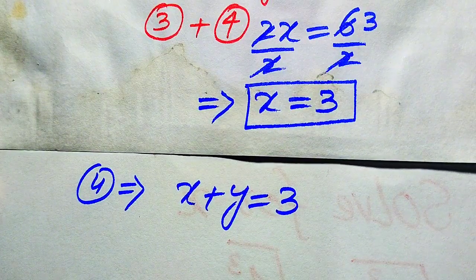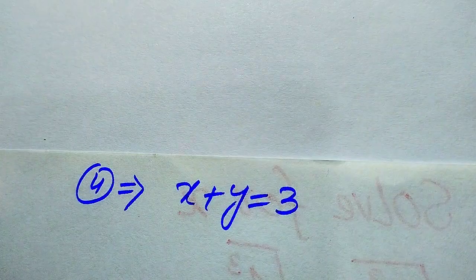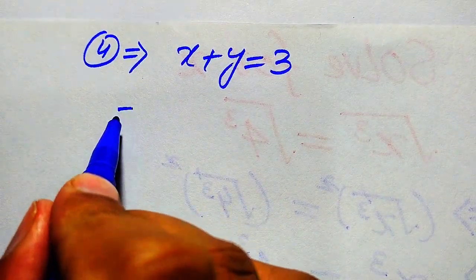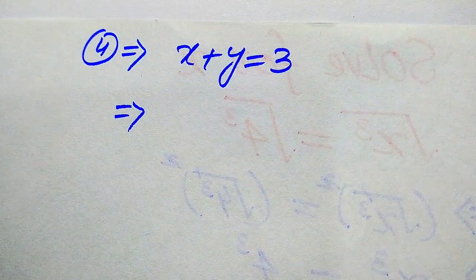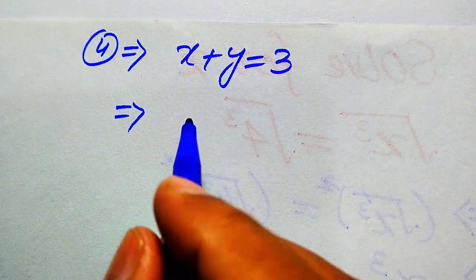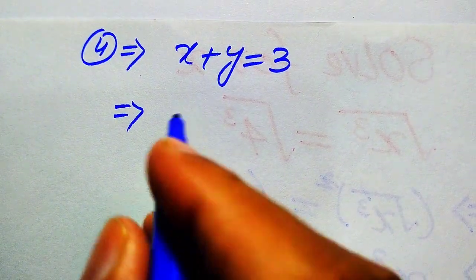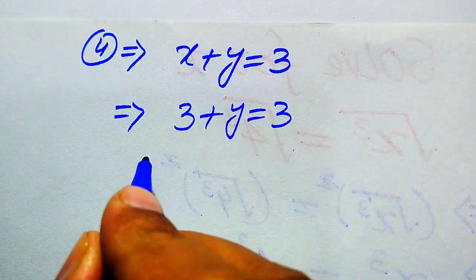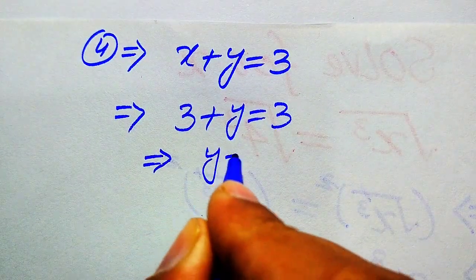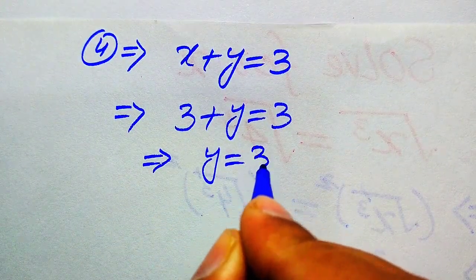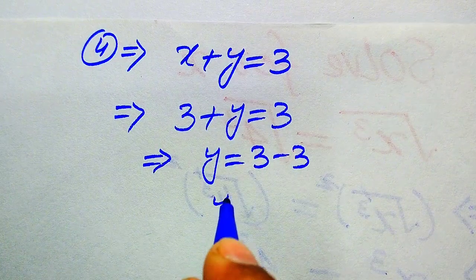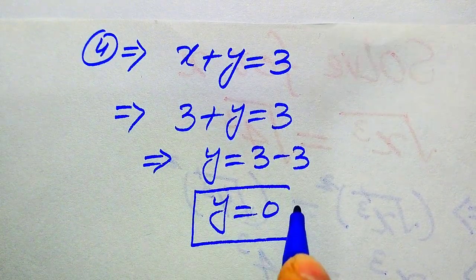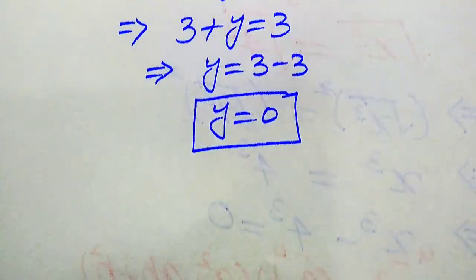We substitute x equals 3 into equation 4, which is x plus y equals 3. This gives 3 plus y equals 3, so y equals 3 minus 3, which means y equals 0.